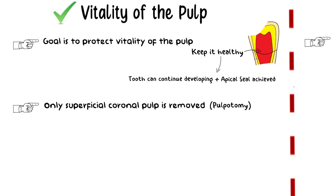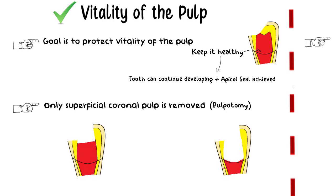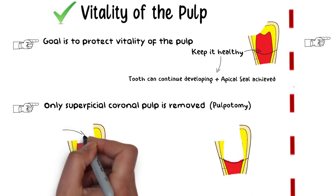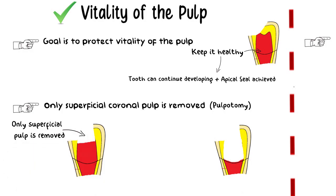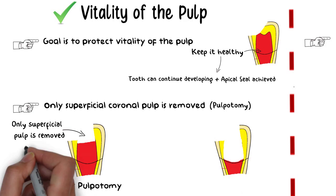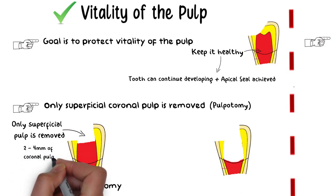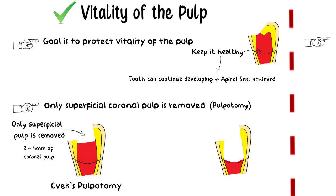If the exposure of the pulp is small and short-lived, then only the more superficial diseased coronal pulp can be removed in a procedure known as Cvek pulpotomy, also known as partial pulpotomy. In Cvek pulpotomy, only the superficial 2-4 mm of the pulp is removed while the rest of the coronal as well as the radicular pulp is spared.